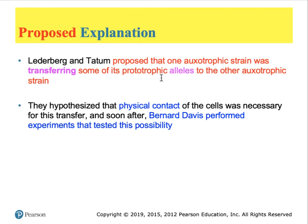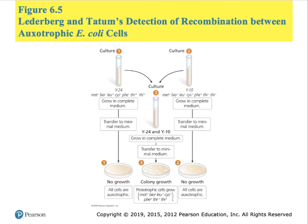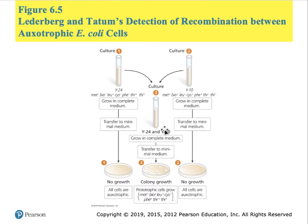They concluded there must have been some type of physical transfer between the cells of Culture I and Culture II, responsible for the phenotype seen in Culture III. Figure 6.5 lays out the experiment. The test tube with pure Culture I (Y24) showed no growth on minimum media, the tube with pure Culture II (Y10) showed no growth, but the mixture of Y24 and Y10 produced some colonies that could grow. They concluded something was being transferred between the two cultures.